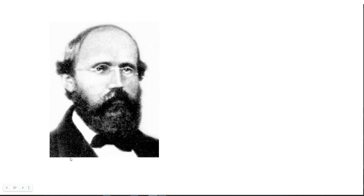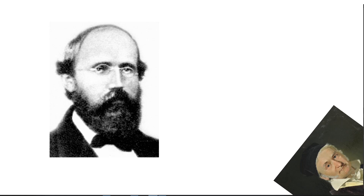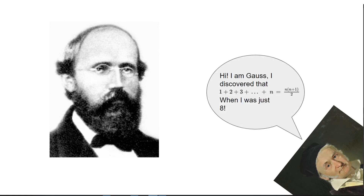Bernhard Riemann was born in 1826. He grew up in a religious family in Hanover and initially wanted to study theology. When he went to the University of Göttingen to study under Carl Friedrich Gauss, Gauss recommended that Riemann become a full-time mathematician, which Riemann decided to pursue. He transferred to the University of Berlin in 1847. Later in his life, he became the head of the mathematics department at the University of Göttingen in 1859, where he started work on the mathematics of general relativity. Riemann died of tuberculosis in 1866 while traveling to Italy.